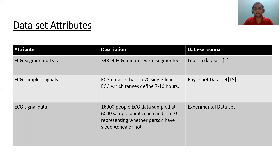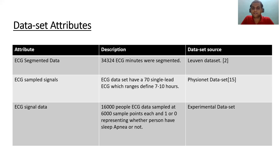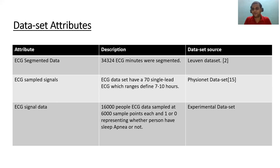Regarding dataset attributes: we have collected datasets in three forms — ECG segmented data, ECG sampled signals, and ECG signal data. Two very common datasets used are the Leuven dataset and the PhysioNet dataset. Many researchers work on these datasets. We extracted segmented data containing 34,324 minutes of ECG signals recorded on different patients. Our experimental dataset worked on 15,000 people, denoted on 6,000 sample points as either 1 or 0, representing whether the person is suffering from sleep apnea or not.